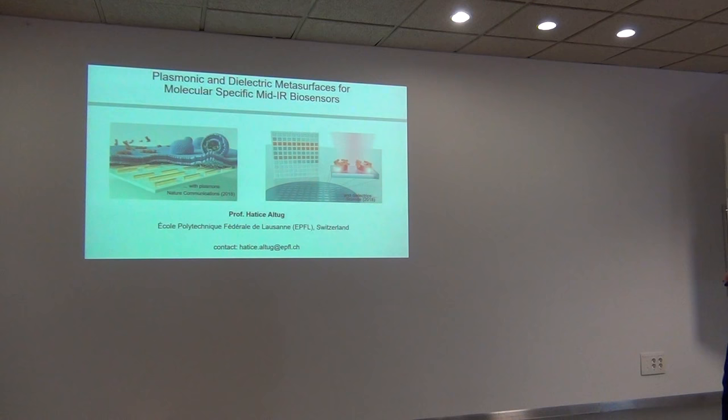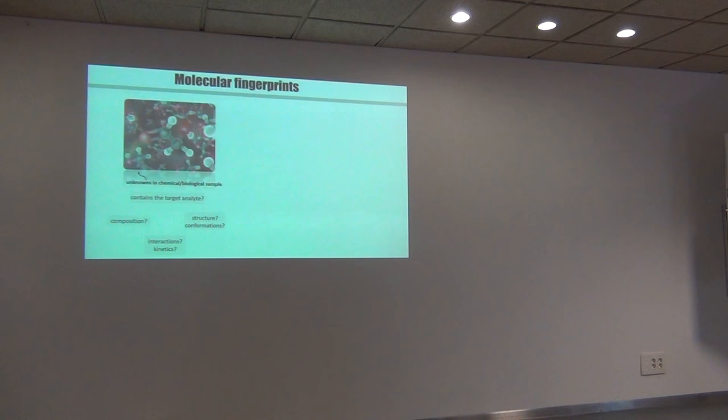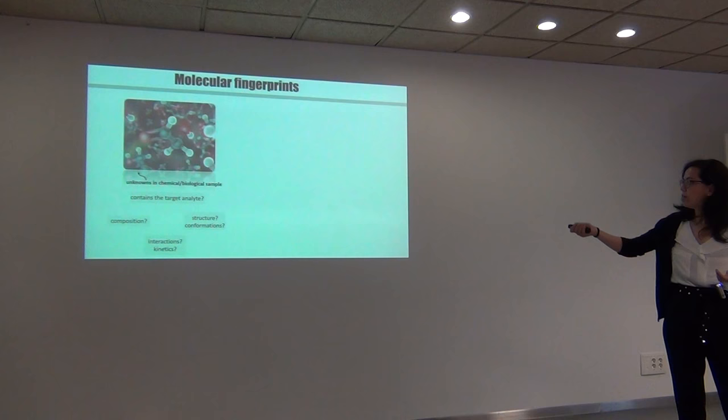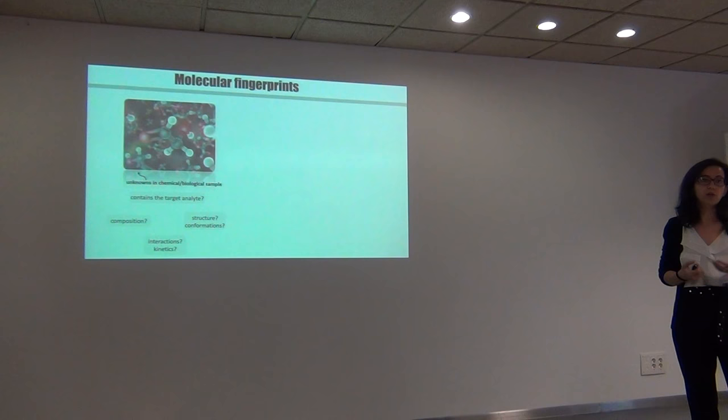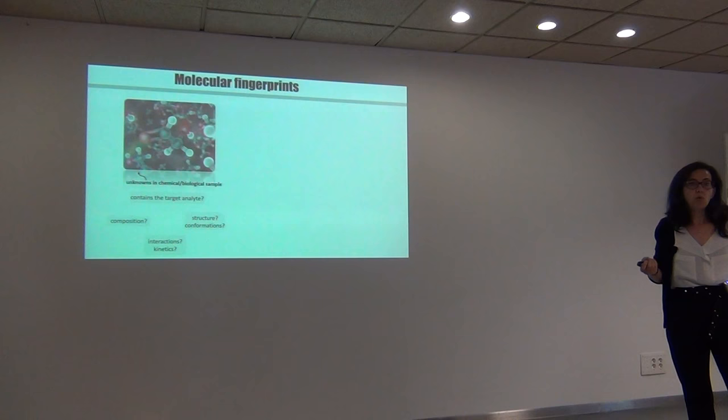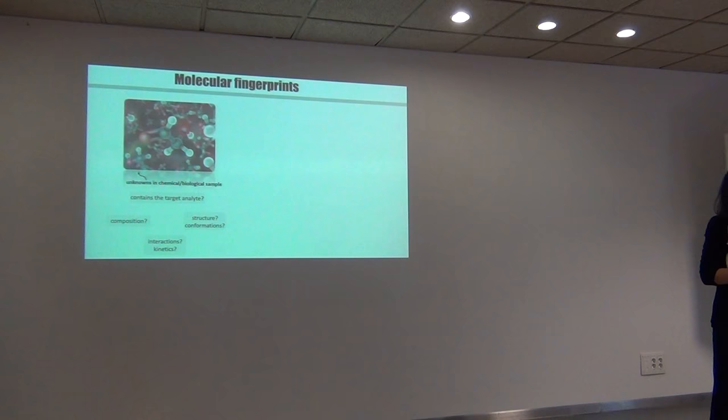To motivate, I would like to start a bit on biosensors, in particular mid-IR biosensors, and I will explain what I mean by molecular-specific. When you are working for biosensing applications or biochemical applications, most of the time you have an unknown biological or chemical sample. The questions that you ask are: does it contain my target analyte — where the target analyte could be a specific protein biomarker? Or it could be a more complex sample where you may be wondering what is the composition — for example, what is the content of lipid versus protein within that?